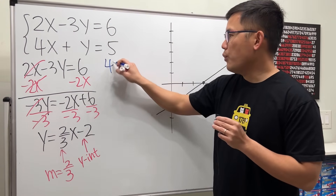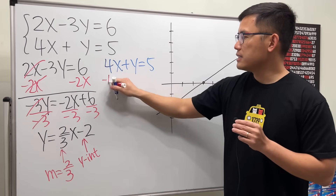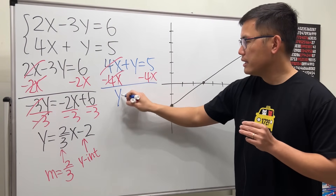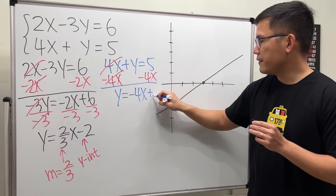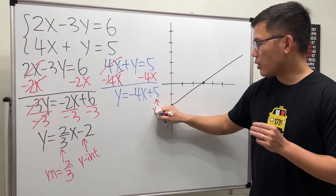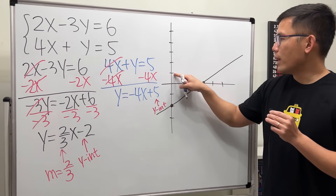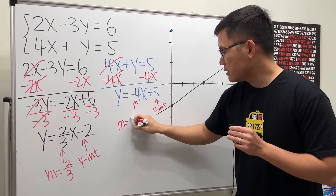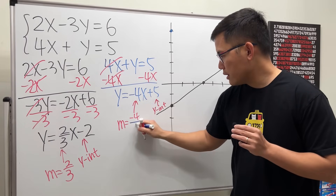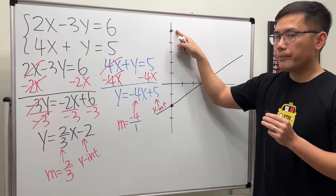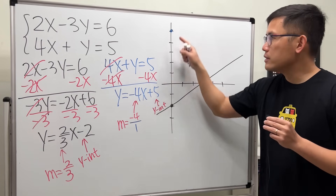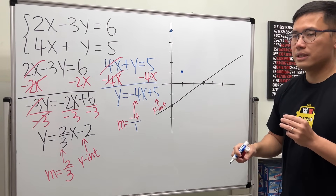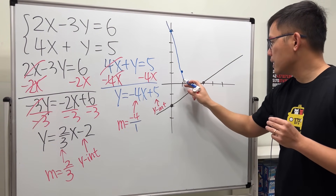For the second equation, 4x plus y equals 5. Let's minus 4x on both sides, and we will have y equals negative 4x plus 5. So here is our y-intercept at 5. Then our slope right here is negative 4, which is the same as negative 4 over 1. Negative 4 tells us we go down 4, and then the 1 tells us we go to the right one time. So go down 1, 2, 3, 4 and then go to the right one time. That's our second point. Then we are going to connect the dots.